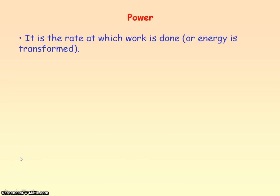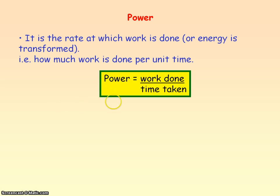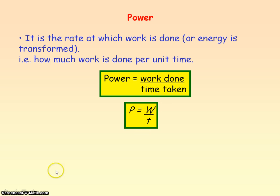Power is the rate at which work is done. And since when work is done energy is being transformed, you can also define power as the rate at which energy is transformed. Rate means per unit time, so work done per unit time equals power. From the definition of power we get the equation: power equals work done divided by time taken, expressed in symbols as P equals W divided by T.